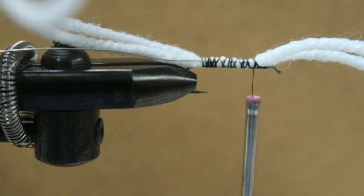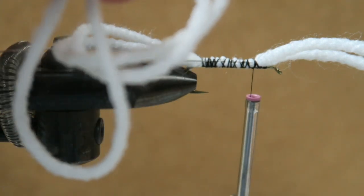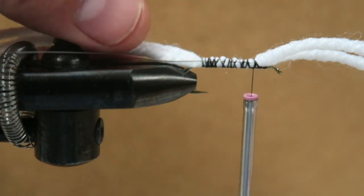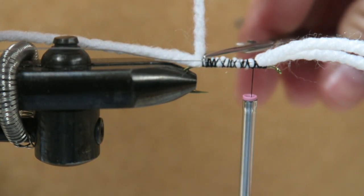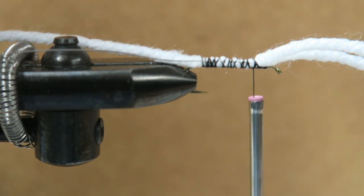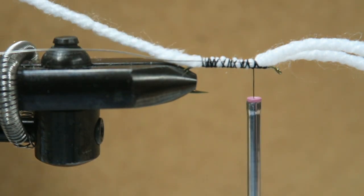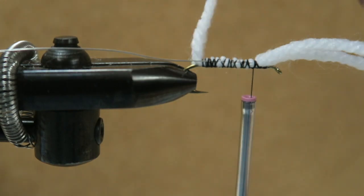At this end hanging off the back, you have that big loop. Take one of the strands where it goes to the hook and just cut it, so that you just have one long strand left.